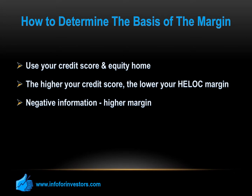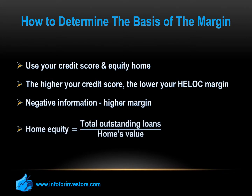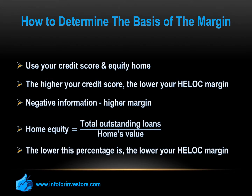You can compute your home equity by dividing the total outstanding loans by your home's value. Most lenders want to see that your total loans do not exceed 90% of your home's value. The lower this percentage is, the lower your HELOC margin will be, and vice versa.